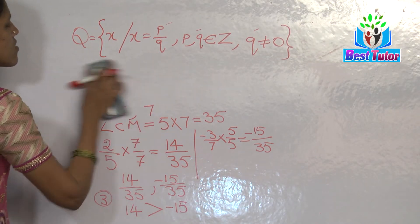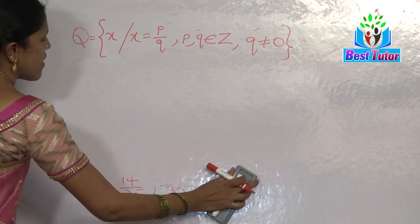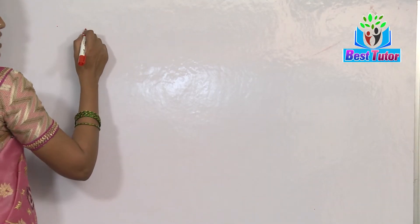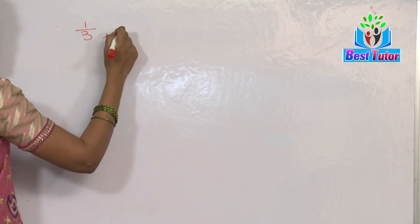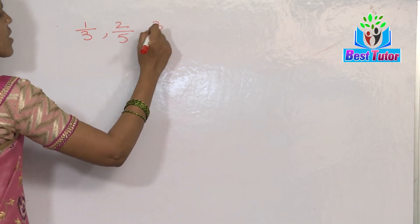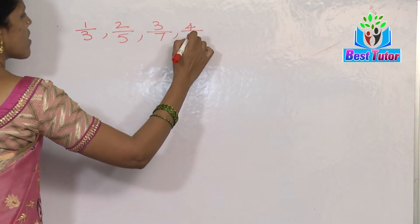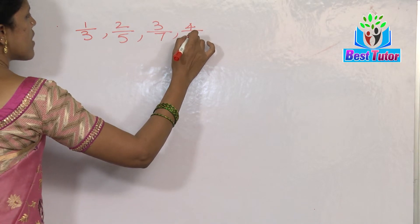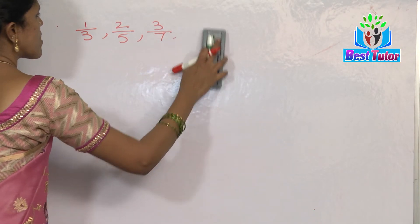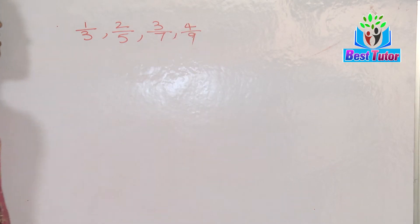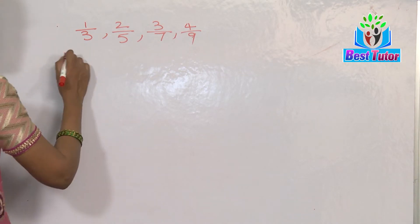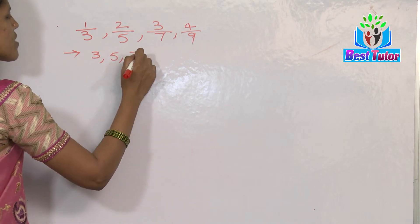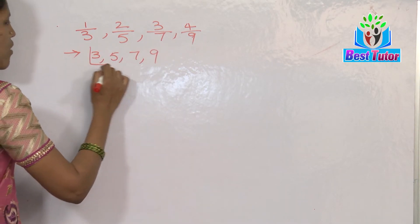We have learned how to compare two rational numbers. But if we have more than two rational numbers, how would the procedure be? Let us consider one by three, two by five, three by seven, and four by nine. There are four different rational numbers here and we need to compare all four. The first step is to consider all the denominators and find out their LCM.